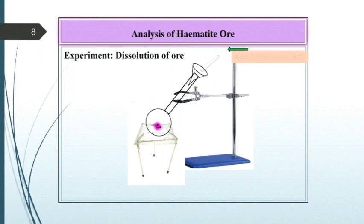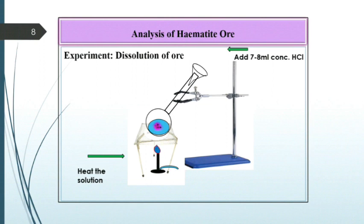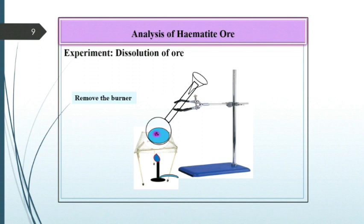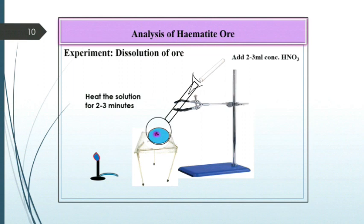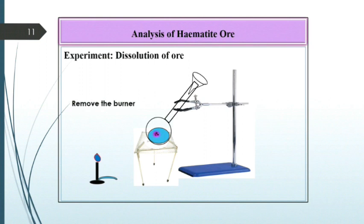Heat the solution by applying burner, thereafter remove the burner and cool the solution well. After cooling the flask, add to this solution 2 to 3 ml concentrated HNO3. After the addition of concentrated HNO3, again heat the solution for 2 to 3 minutes, then again remove the burner and cool the flask well.